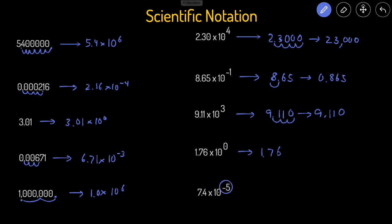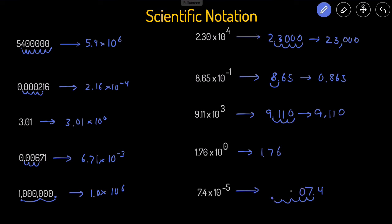The last one has a negative exponent, so the final answer is going to be less than one. We're going to move the decimal point to the left five times, starting with 7.4: one, two, three, four, and five. Filling in the zeros, the final answer is 0.000074 — you can see this number is definitely less than one.